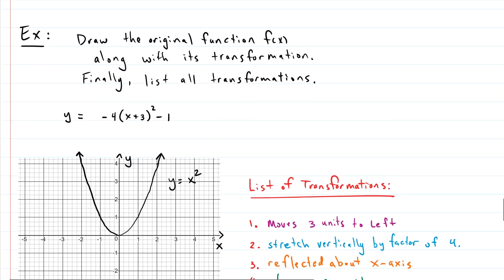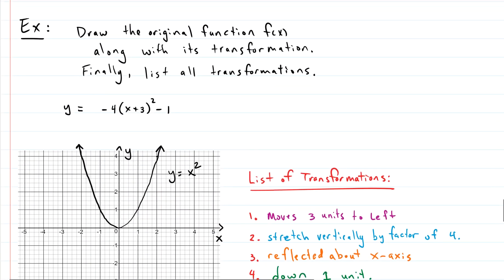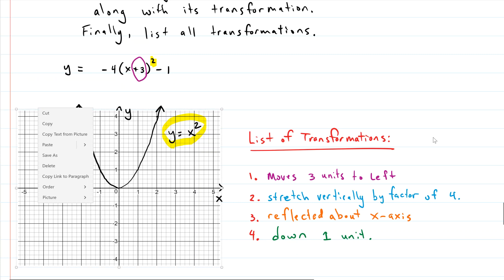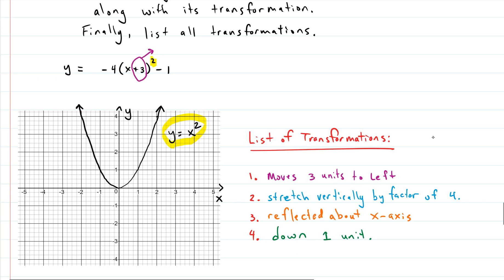Now our example: draw the original function along with its transformations, then list all the transformations you're doing. We look at this and think — what is the original function? If we look at the squared term, we can guess we're dealing with a parabola. So y equals x squared is our original function, and we're going to have some transformations that go along with it. The first thing we deal with is the horizontal movement. The positive three inside tells us we move three units to the left.